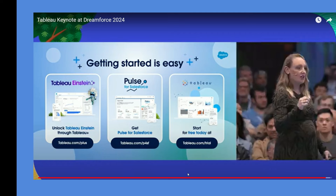That wraps up Part 1 — a Part 2 is coming covering another exciting demo. To access these AI features: you need a Tableau Plus license to unlock Tableau Einstein; for Pulse for Salesforce, there is a dedicated offering with a link provided. If you're new and have no access, you can start a free trial at tableau.com/trial — note that Tableau Einstein capabilities are not included in the trial, but Tableau Pulse is. Hope this was informative — keep on dancing with data!